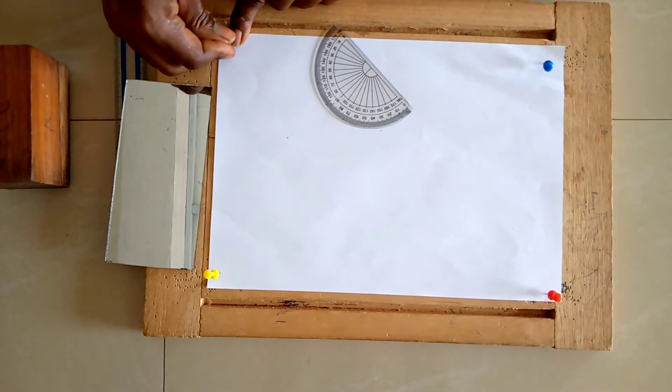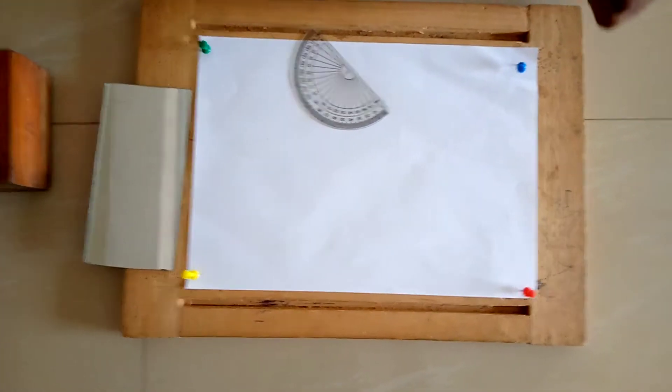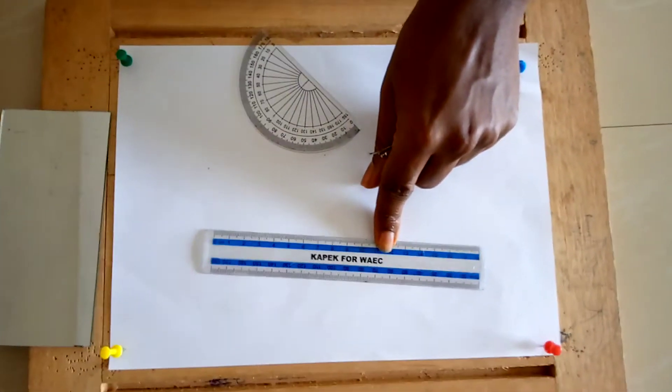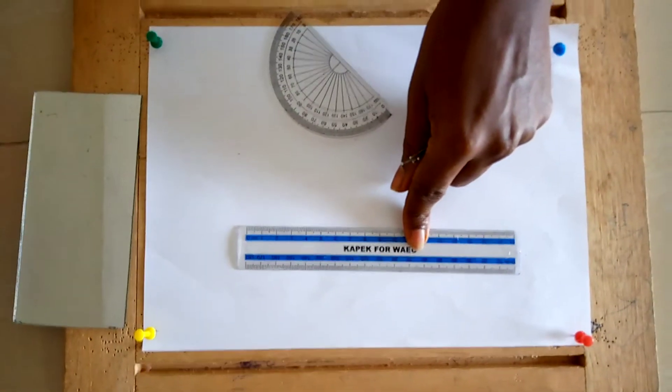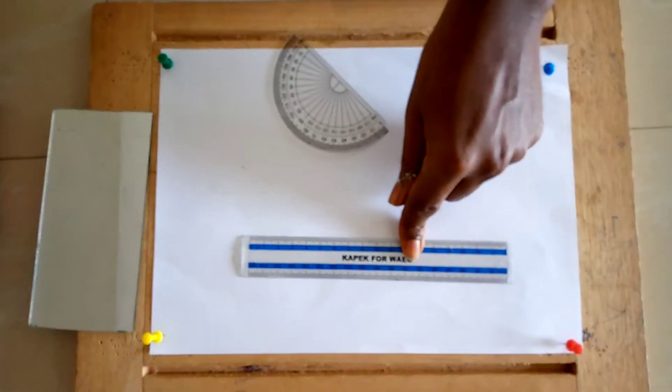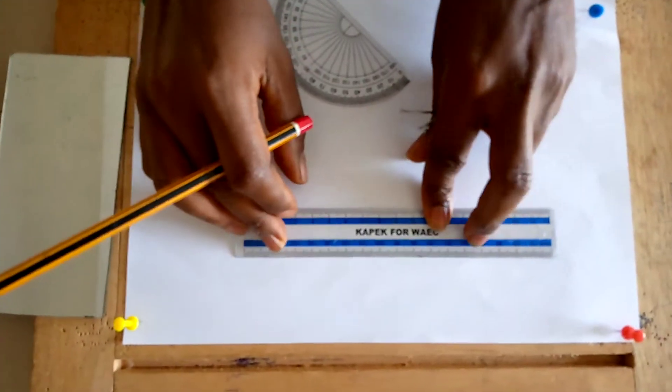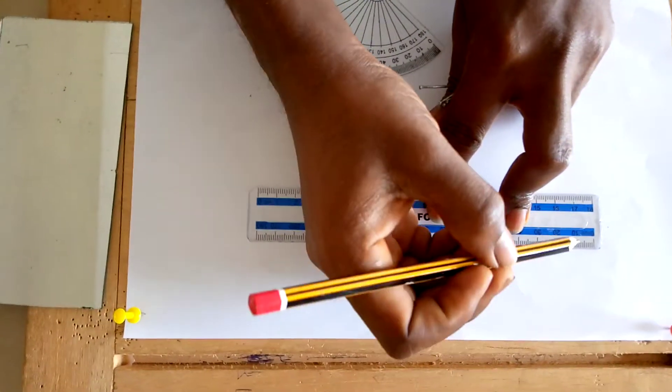Then use your ruler to draw a horizontal line on the paper. Please label it appropriately, label it AB.